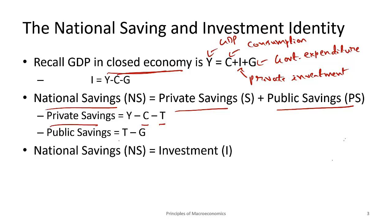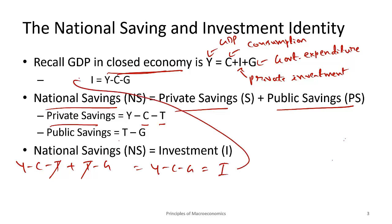Now let's look at national savings equal to investment. National savings is private savings (Y minus C minus T) plus public savings (T minus G). The T's cancel out, leaving us with Y minus C minus G, which is nothing but I. So in a closed economy, private investment is nothing but national savings — whatever we save transfers into investment somewhere in the economy.